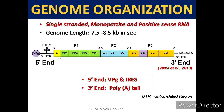Genomic organization: The genome is single-stranded, monopartite, and positive-sense RNA. The genome length is 7.5 to 8.5 kilobase pairs. The 5' UTR has VPg and IRES (internal ribosome entry site), and the 3' UTR has a poly-A tail.